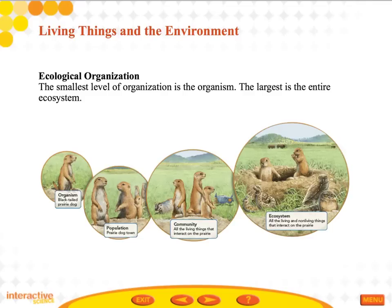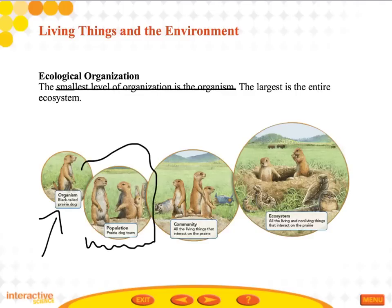This is a great representation of ecological organization. The smallest level of organization is the organism and the largest is the entire ecosystem. Mr. Prairie Dog down in this corner is that smallest level — he is the organism itself. Next up is the population: the prairie dog town includes all the prairie dogs, and that is their population.